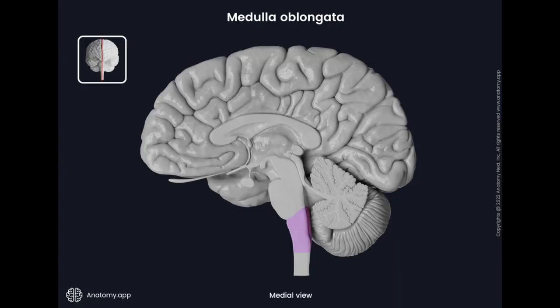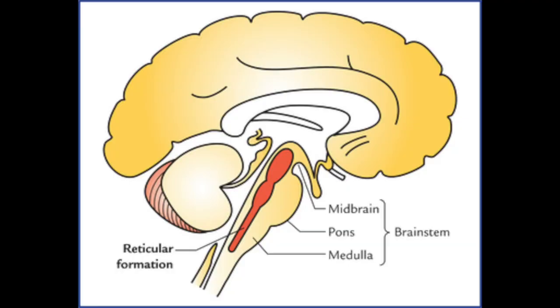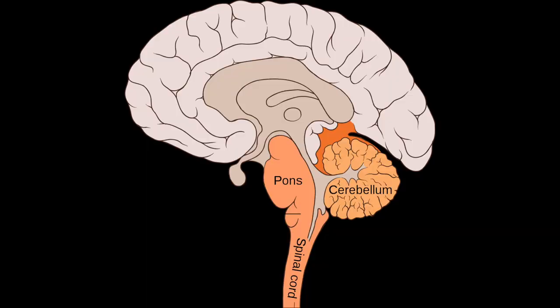The medulla oblongata controls involuntary actions — the basic life functions like breathing, heart rate, and digestion. Then you have your reticular formation, or RAS, which controls arousal — think wakefulness and alertness. Finally, you have pons. I think of pons as a bridge that helps pass neural information from one region of the brain to another. The pons is also involved in REM sleep. So that's the hindbrain.